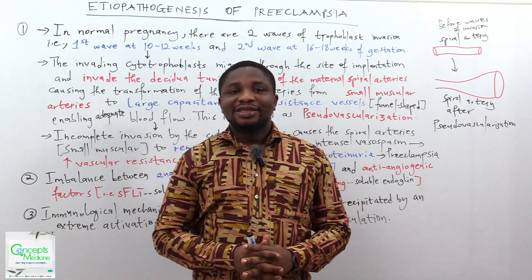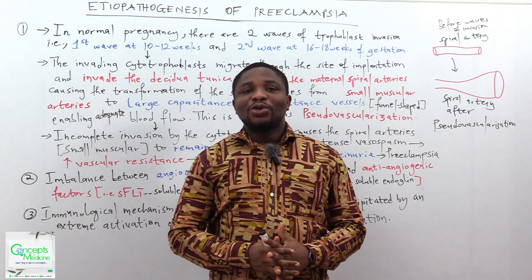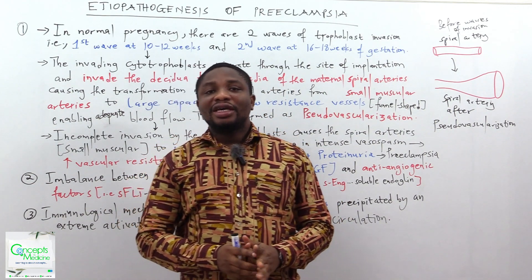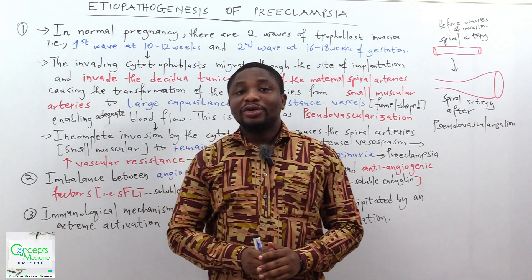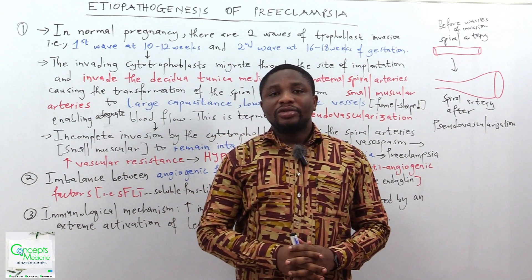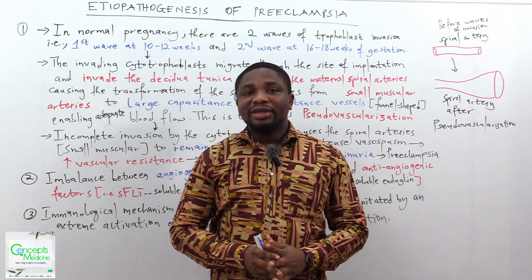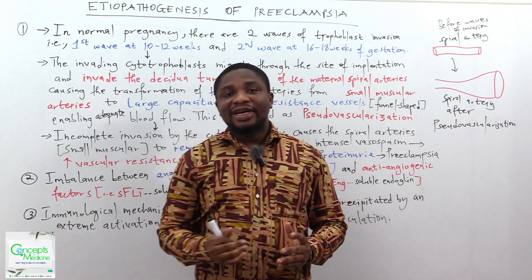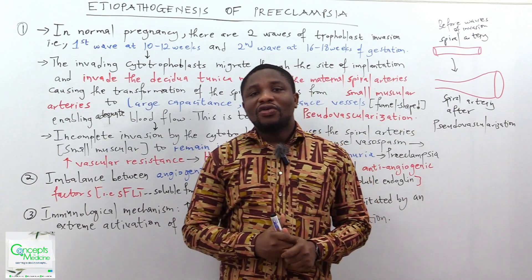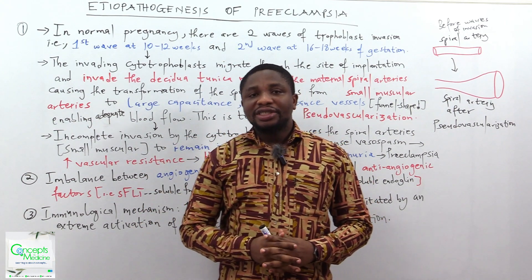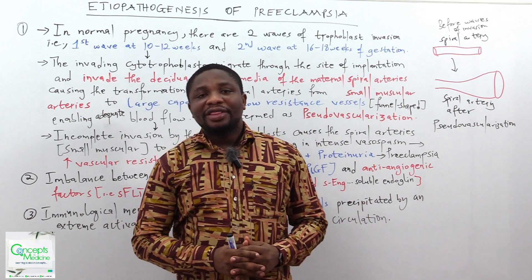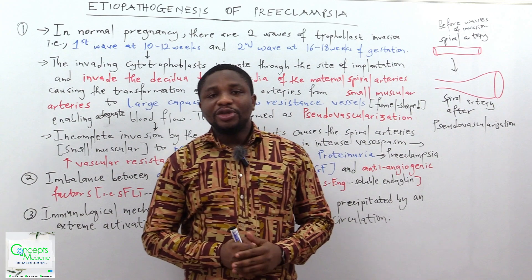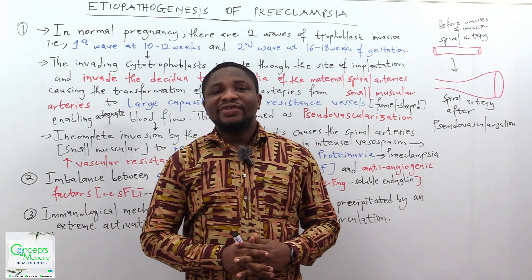But before we do that, let's answer the question from our previous session: why is it important to treat all opportunistic infections prior to starting antiretroviral therapy in an HIV-infected patient? The answer is to prevent Immune Reconstitution Inflammatory Syndrome, also known as Immune Restoration Disease or Immune Reconstitution Syndrome — popularly known as IRIS. IRIS is defined as the paradoxical clinical worsening of a known condition, or the presence of a new condition, following the initiation of antiretroviral therapy in an HIV-infected patient, resulting in the restoration of immunity to specific infectious and non-infectious antigens.